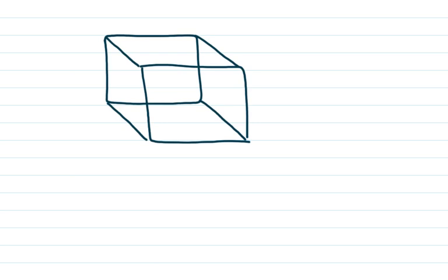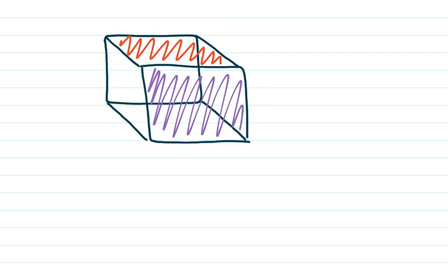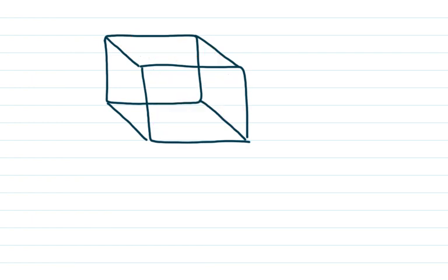There are a couple of important things about a rectangular prism. It's made up of rectangles. If you notice on a rectangular prism, all of the faces are rectangles — this face, this face — all of the faces of this box are rectangles. That's why it's called a rectangular prism.